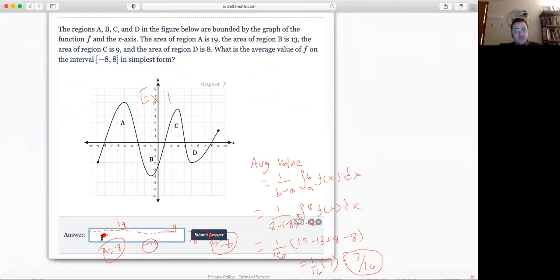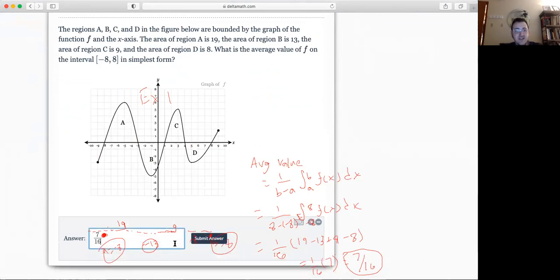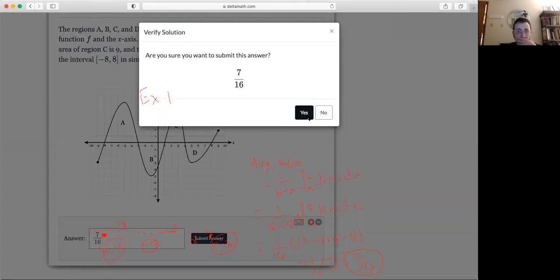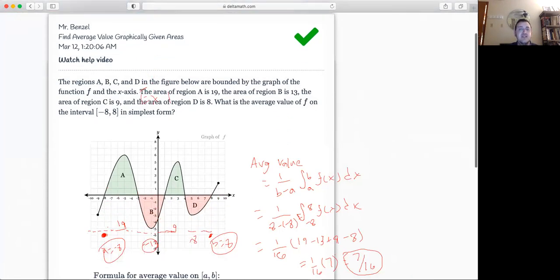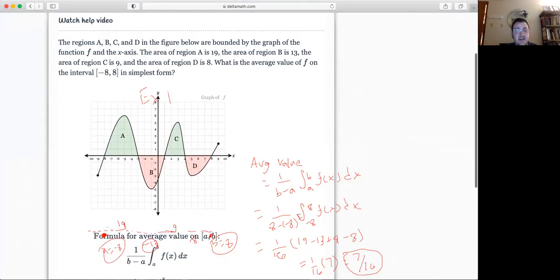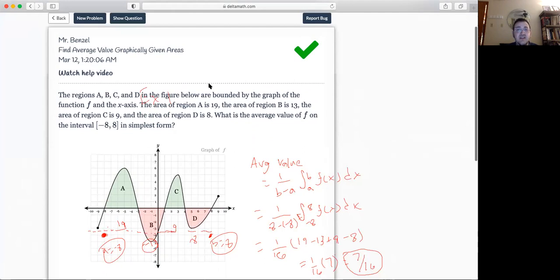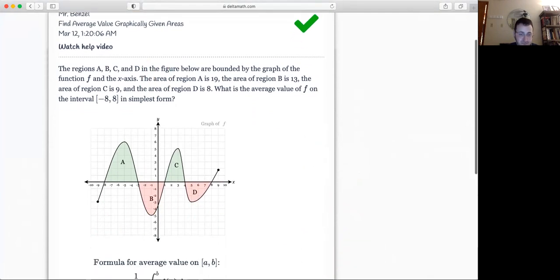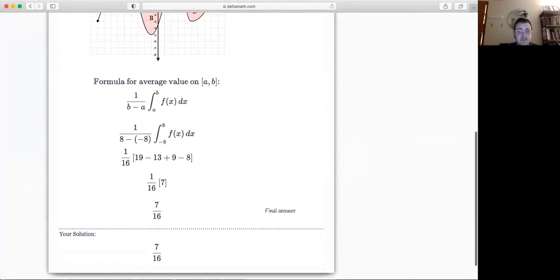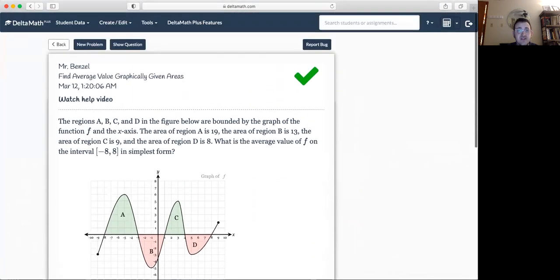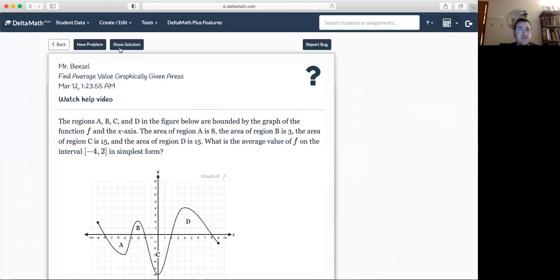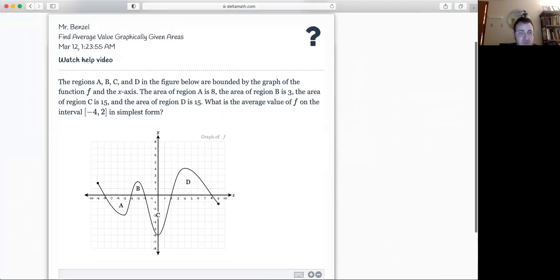And I'll just put the 7 over 16 in. And you can actually kind of see the sign, the areas as well. Let's just do one more. We'll call this example 2. And then we'll go to a new type of question that is without the graphs.